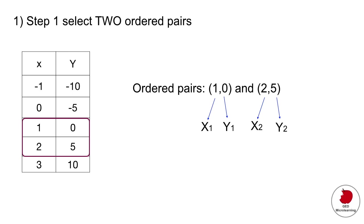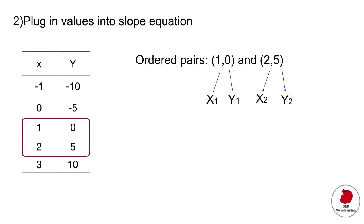I've selected two ordered pairs. Remember that in an ordered pair the first value is x1, the second value is y1, and then in the second ordered pair it would be x2, y2. What you do now is plug those into your slope equation: y2 minus y1 divided by x2 minus x1.